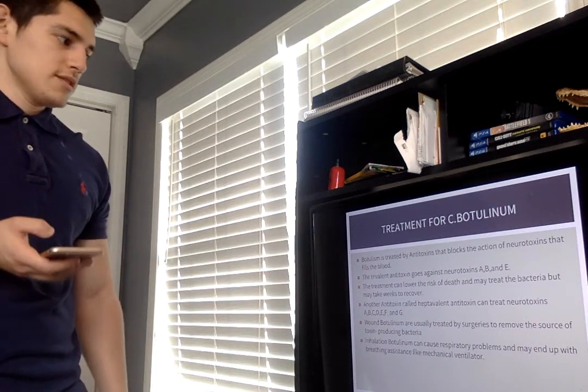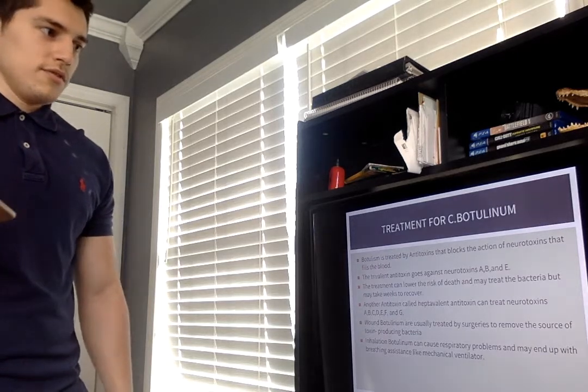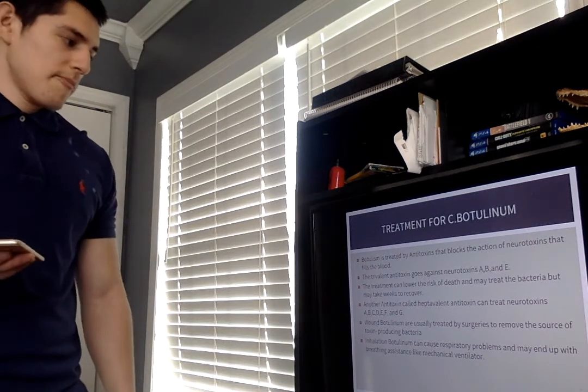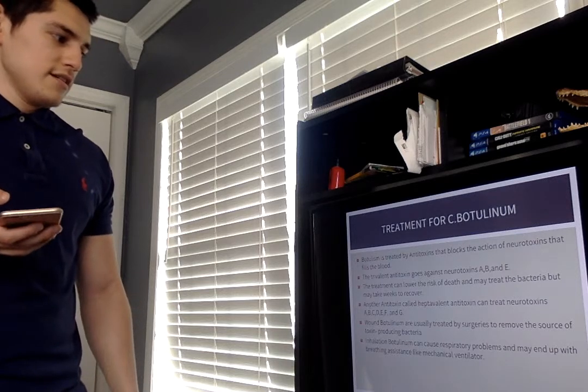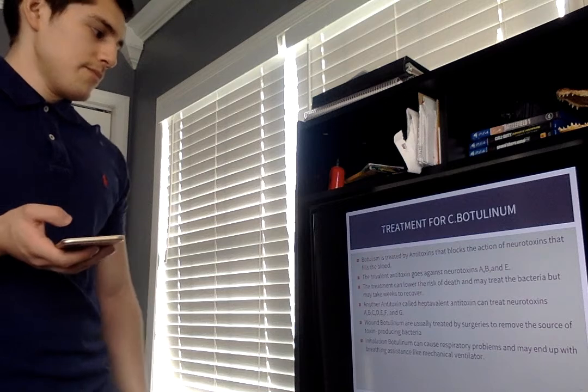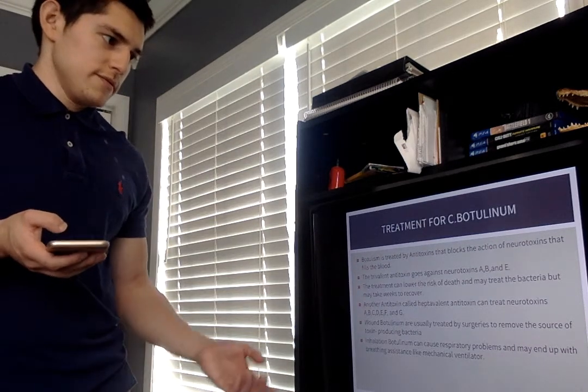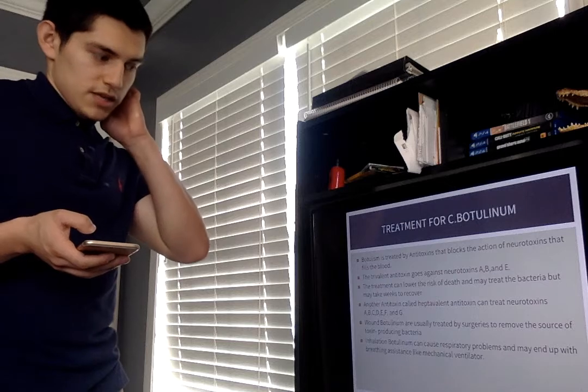Treatment for botulinum. Botulism is treated by antitoxins that block the action of neurotoxins in the blood. The trivalent antitoxin goes against neurotoxins A, B, and E. The treatment can lower the risk of death and treat the bacteria but may take weeks to recover.